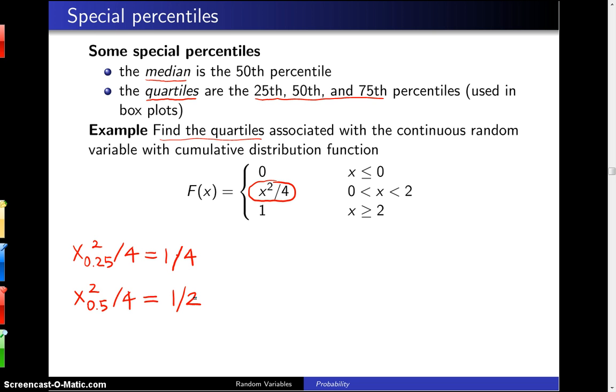Finally, to find the 75th percentile of the distribution, which is the third quartile, you plug it into the cumulative distribution function, but this time you set it equal to 0.75, which I'm going to write as three-fourths.